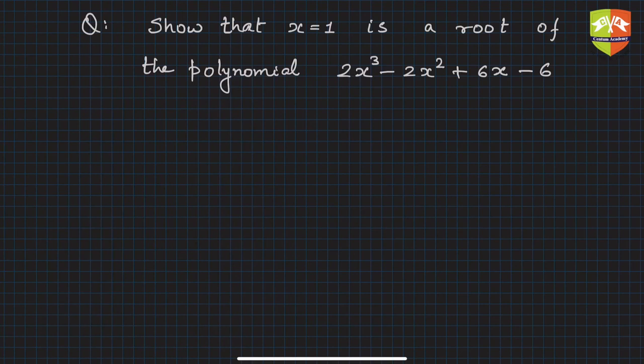Hello friends, welcome to this session on polynomials. We are going through problems related to zeros of a polynomial. In the last session, we learned what a zero of a polynomial is. A zero of a polynomial is the value of the variable which makes the value of the polynomial equal to zero.